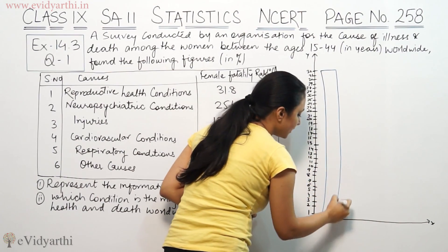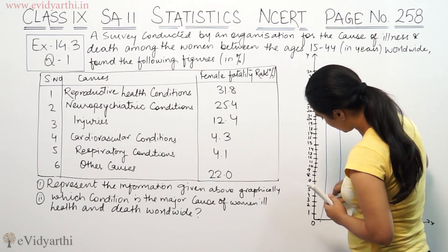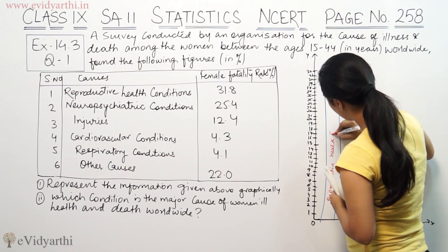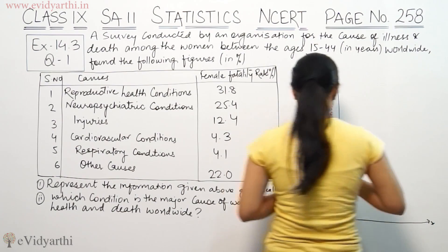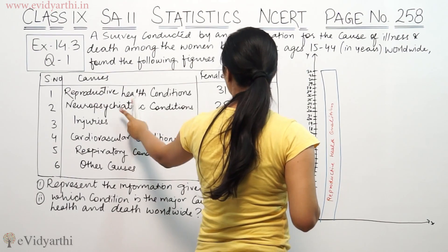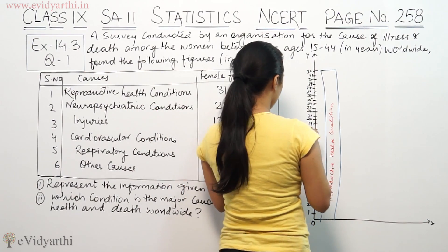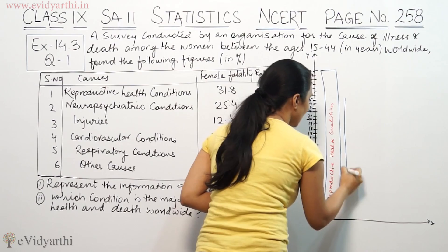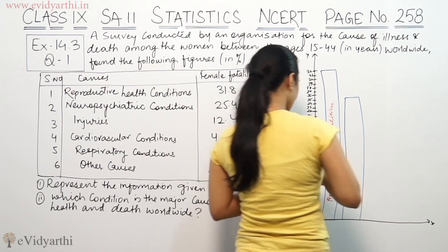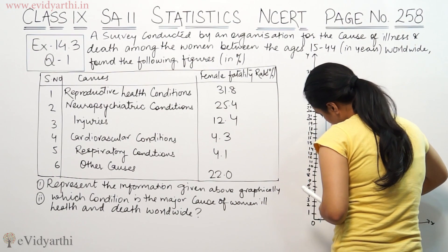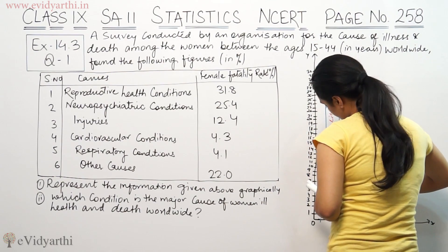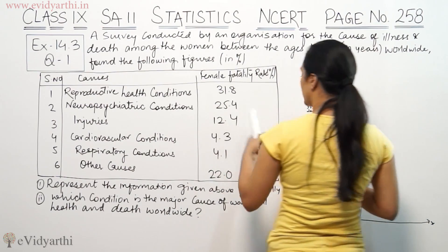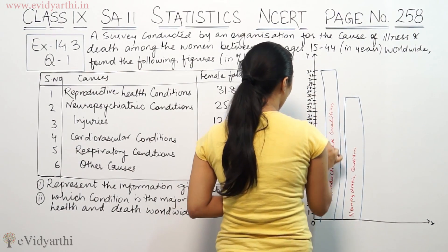This is the reproductive health conditions. Next one is 25.4 — neuropsychiatric conditions. Here is the next box for neuropsychiatric conditions. Next is injuries, 12.4. This is the injuries bar.